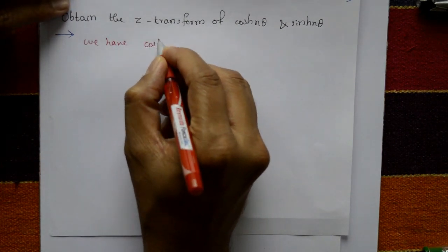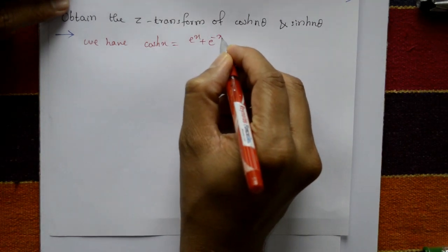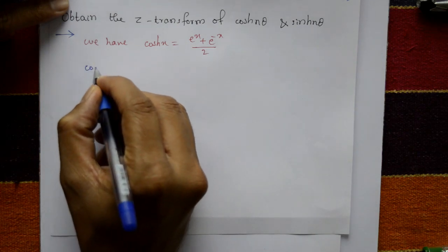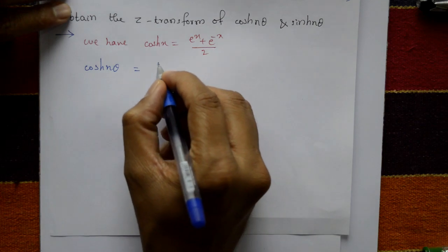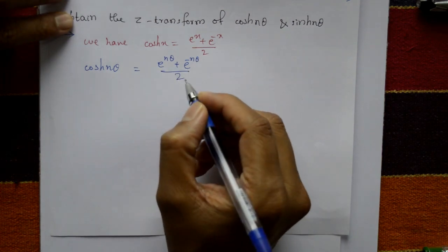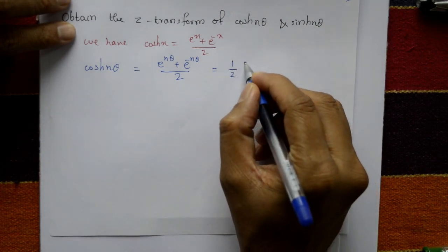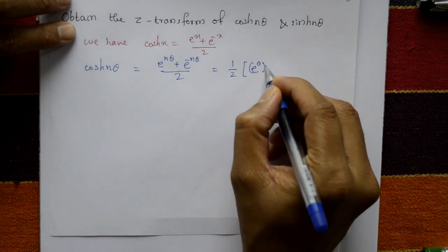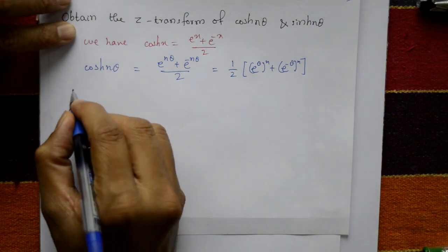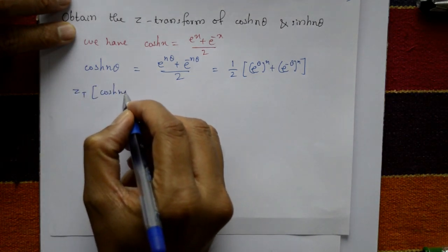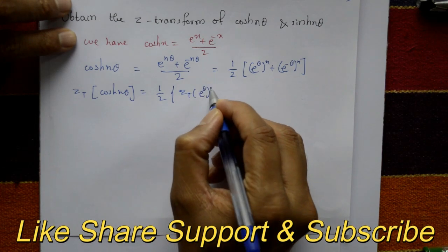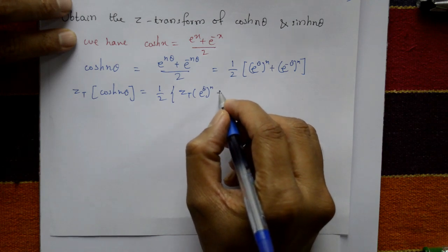The standard formula is: cosh(x) = (e^x + e^(-x)) / 2. Applying this to cosh(nθ), we get: (e^(nθ) + e^(-nθ)) / 2, or (1/2) times (e^θ)^n plus (e^(-θ))^n. Now taking the Z-transform on both sides.